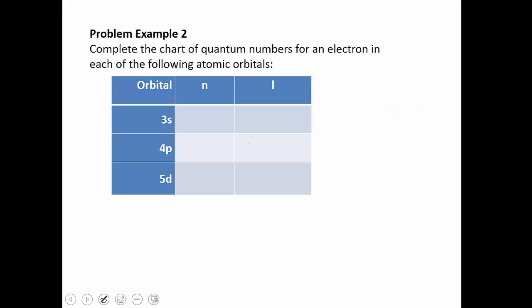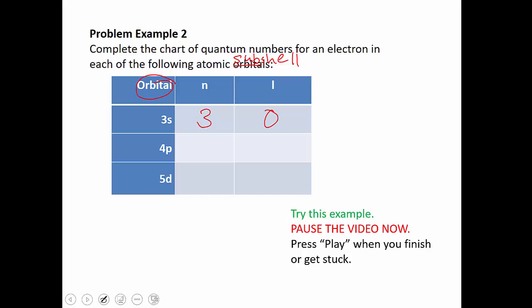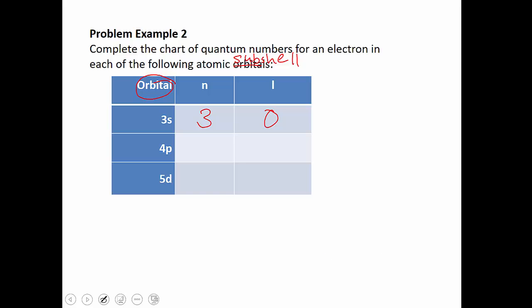Now complete the chart of quantum numbers for electrons in each of the following atomic subshells. For 3S: the 3 tells us N equals 3, and S tells us L equals zero. For 4P: N equals 4 and P has a defined L value of 1. For 5D: N equals 5 and D always has a value of L equals 2.